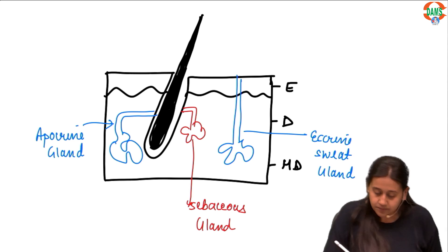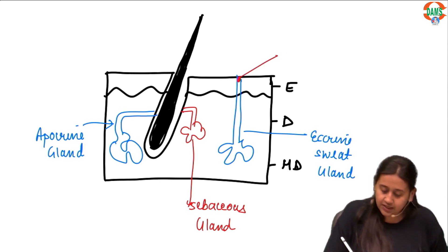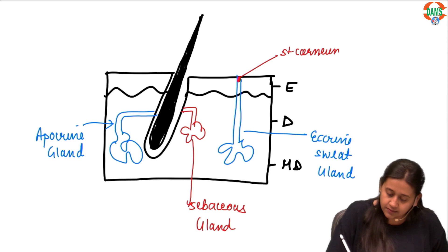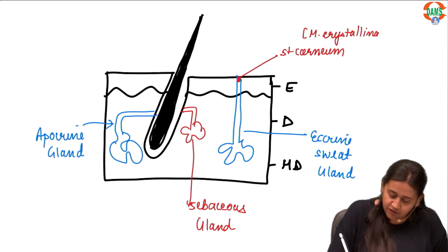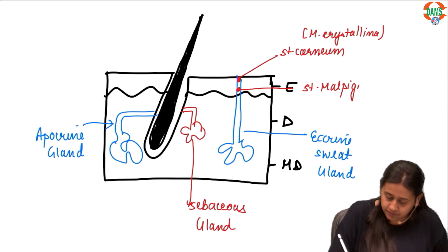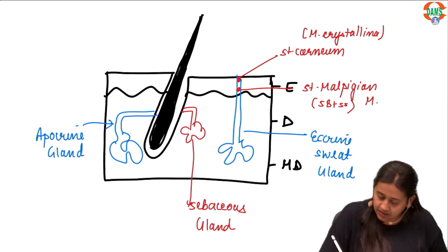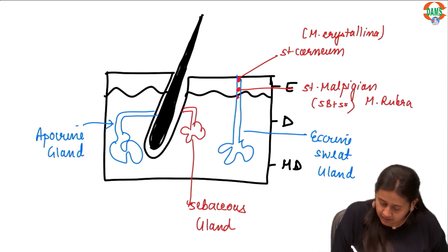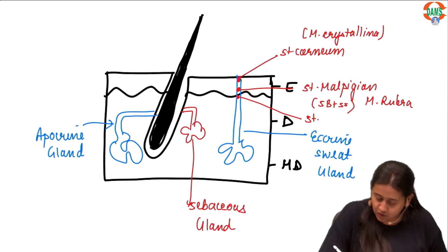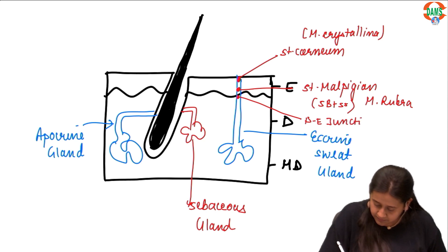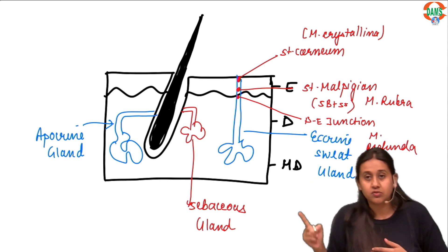Sometimes you see obstruction of the eccrine gland. If it obstructs at the level of stratum corneum, you call it miliaria crystallina. If it obstructs at the level of stratum malpighii — which is a combination of stratum basale and stratum spinosum — this is miliaria rubra. If the obstruction is at the dermo-epidermal junction, it is miliaria profunda. These are the obstruction types with respect to the eccrine sweat gland.